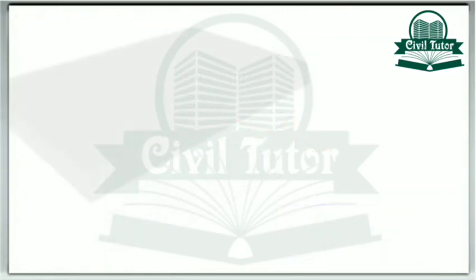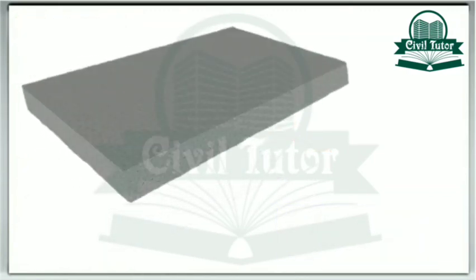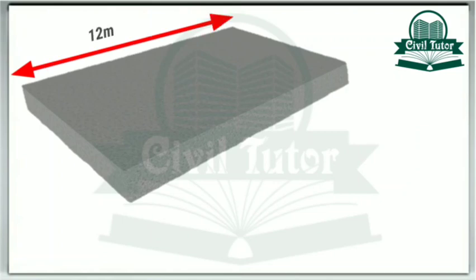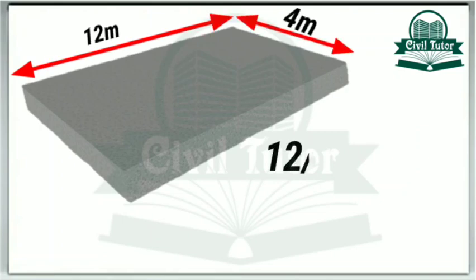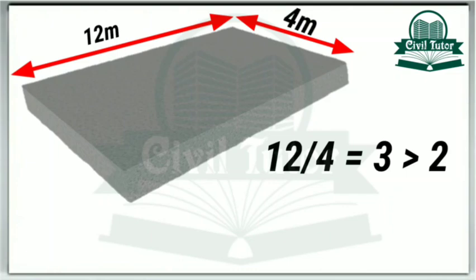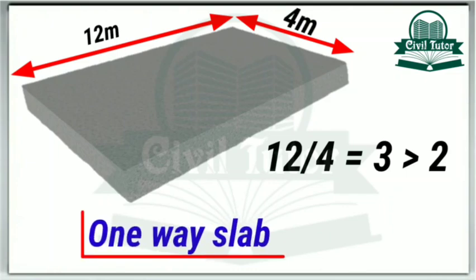For illustration, consider a slab with length 12 meters and breadth 4 meters. The ratio of length to breadth will be equal to 12 by 4, equal to 3, which is greater than 2. Hence it clearly indicates that the slab with assumed dimensions is a one-way slab.